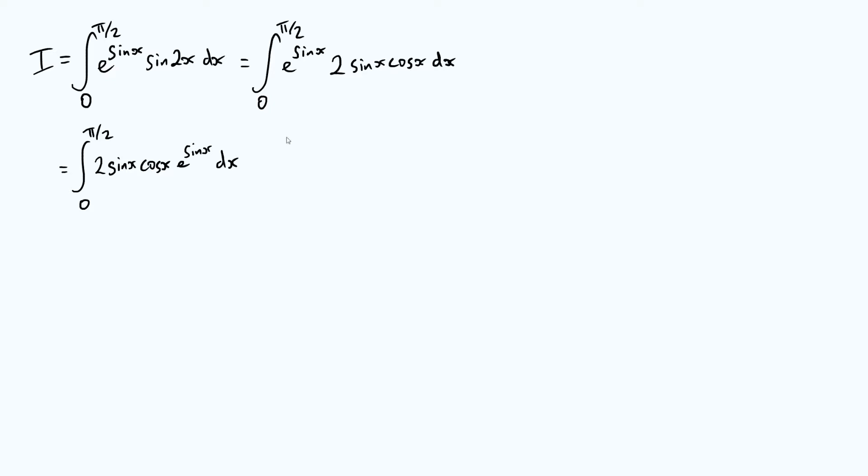Now what is the reason for just reordering these terms? It's because we've got this cos x e to the sine x. Now you'll notice that this is actually just the derivative of e to the sine x. From the chain rule, if we were to differentiate e to the sine x, we would get cos x times e to the sine x.